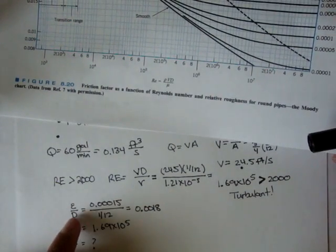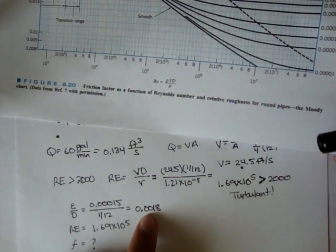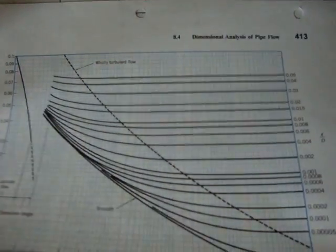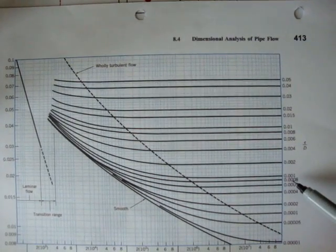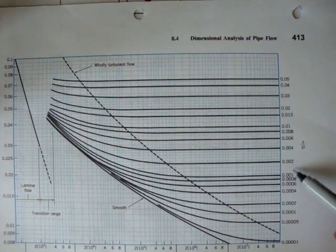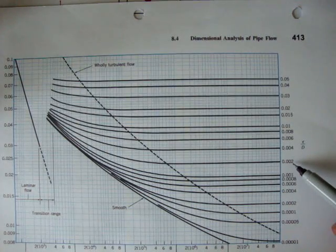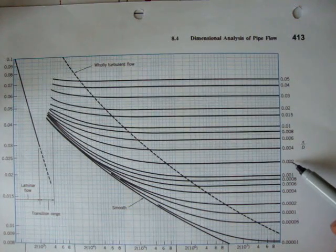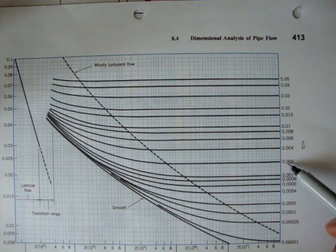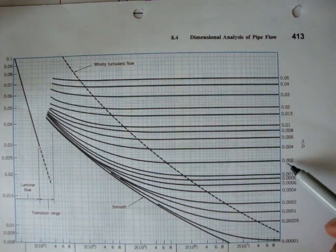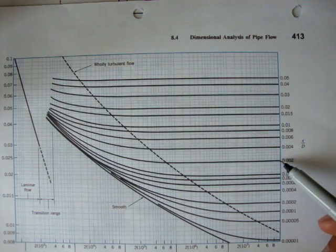So, estimating the frictional factor. Our relative roughness was 0.0018. And 0.0018 doesn't appear on here. The closest thing we have to 0.0018 is this 0.002. So for now, we'll just use this black line right here.